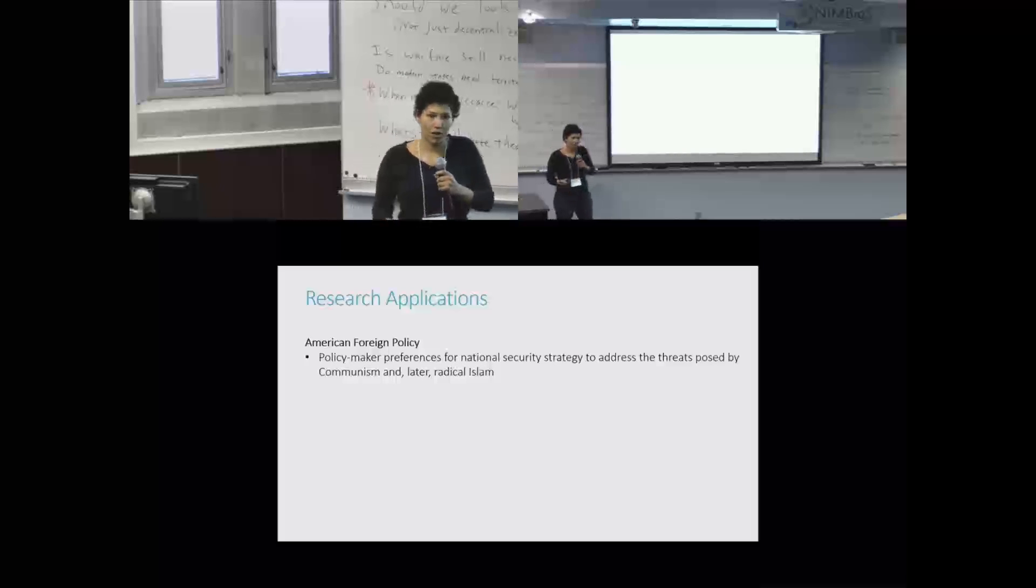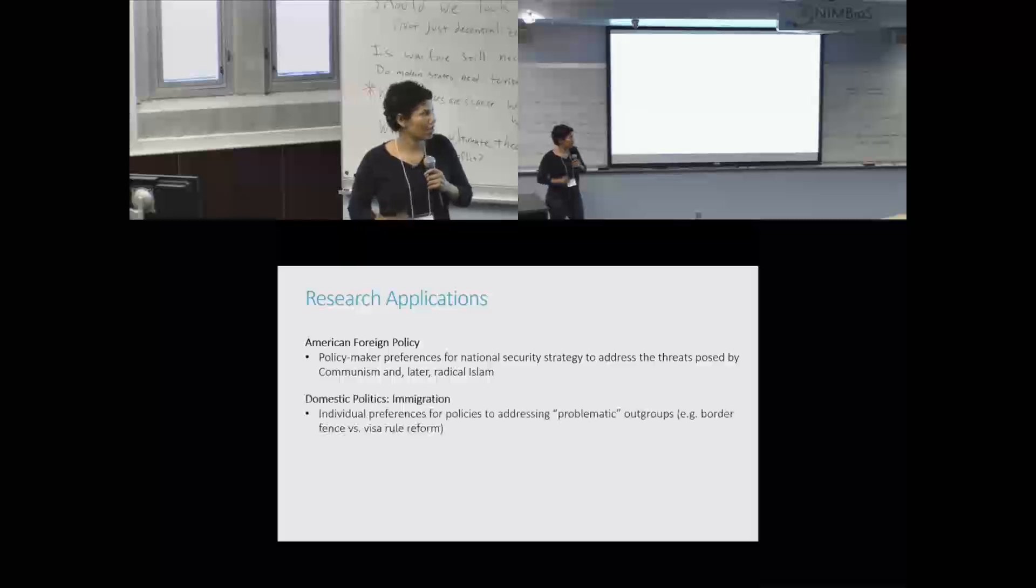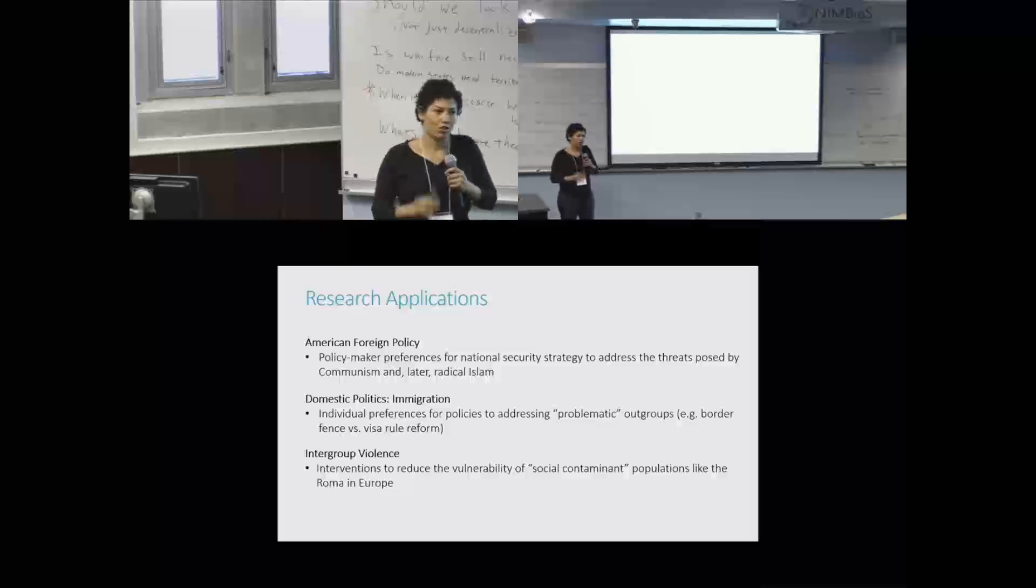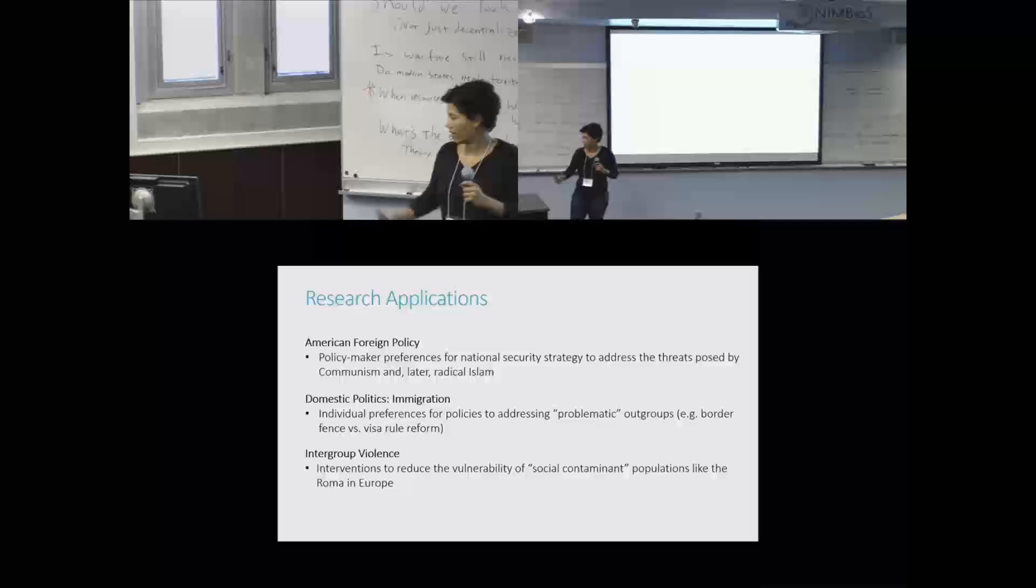One is to look at American foreign policy and individual policymakers. Another is to actually get to the micro foundations of this, that neurobiological component that I mentioned with respect to looking at attitudes towards domestic policy and immigration. And finally, looking at intergroup violence directed particularly at groups that are called social contaminants.